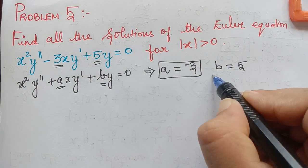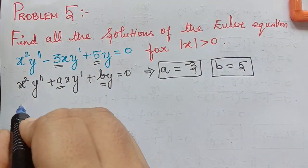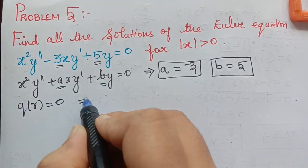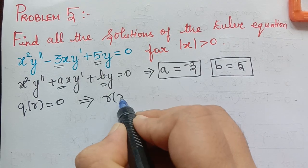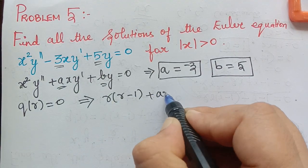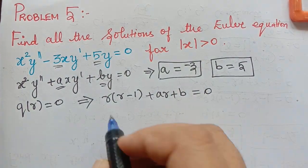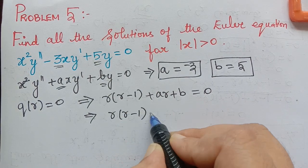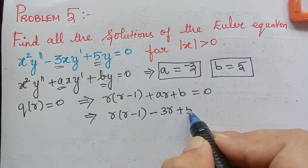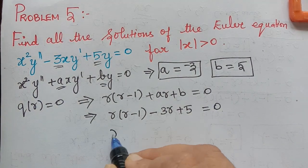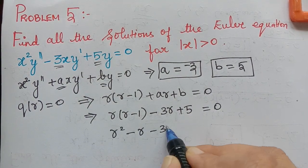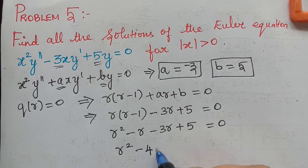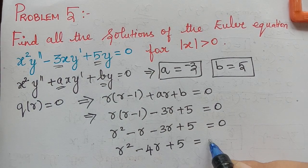Substituting a = −3 and b = 5 in the indicial polynomial q(r) = r(r−1) + a·r + b = 0, we get r(r−1) − 3r + 5 = 0. Expanding: r² − r − 3r + 5 = 0, giving r² − 4r + 5 = 0.